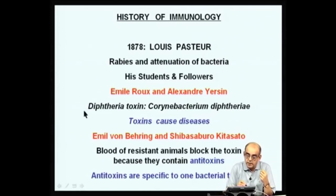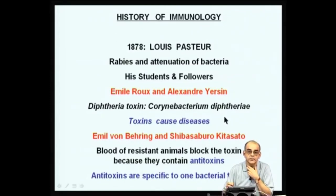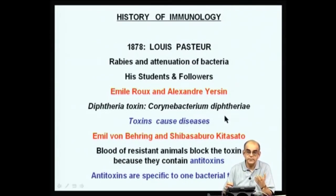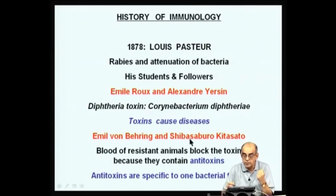So, how is it possible that when the bacteria is residing in the throat, it can kill the individual? They said this particular organism is secreting a toxin, which they called the diphtheria toxin. They propounded this concept that toxins cause diseases. Then it was Emil von Behring and Shibasaburo Kitasato who discovered that when you inject these toxins — available by growing these bacteria in petri plates and taking culture filtrates — into larger animals like chickens, dogs, rabbits, or guinea pigs, the blood of those animals resistant to the toxin had the ability to block the action of the toxin.